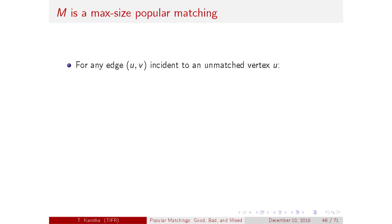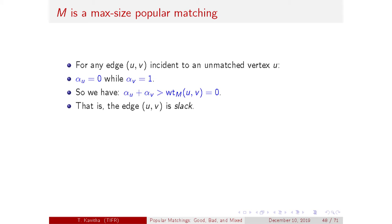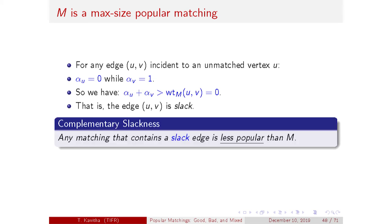We also need to show no larger matching is popular. Any larger matching must use an edge incident to an unmatched vertex. For any unmatched vertex, alpha_u is 0, while all its neighbors have alpha value +1. So this edge is slack: its weight is 0 but the sum of alpha values of the endpoints is +1. By complementary slackness, any matching containing a slack edge cannot be a primal optimal solution — its weight under the edge weight function is less than 0, meaning it is less popular than M. So M defeats every larger matching.